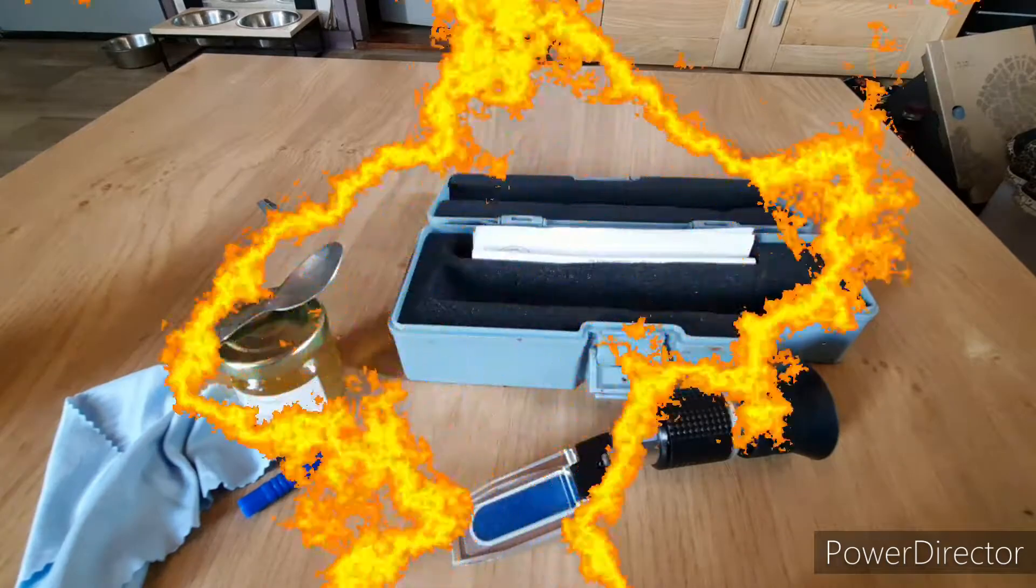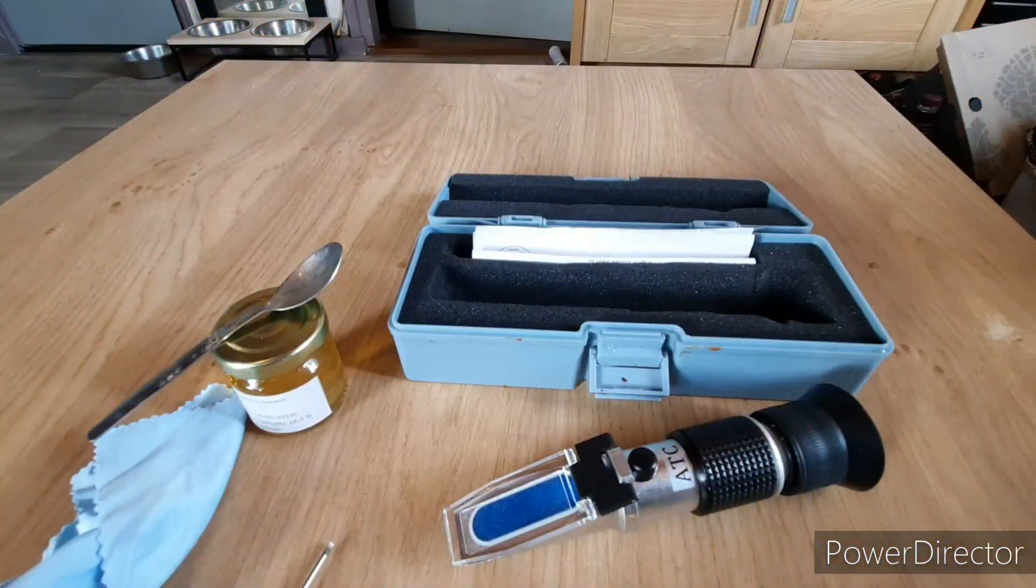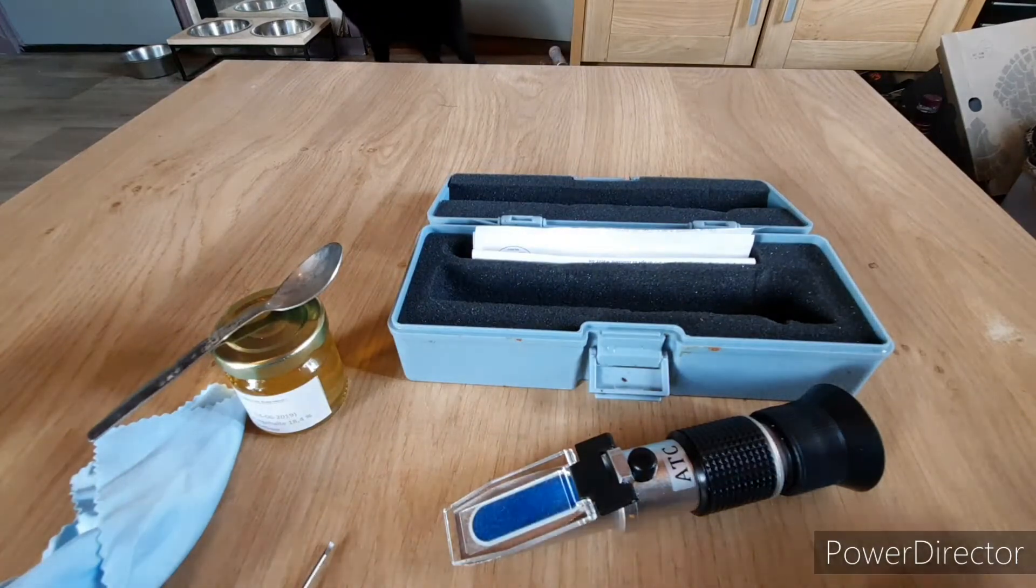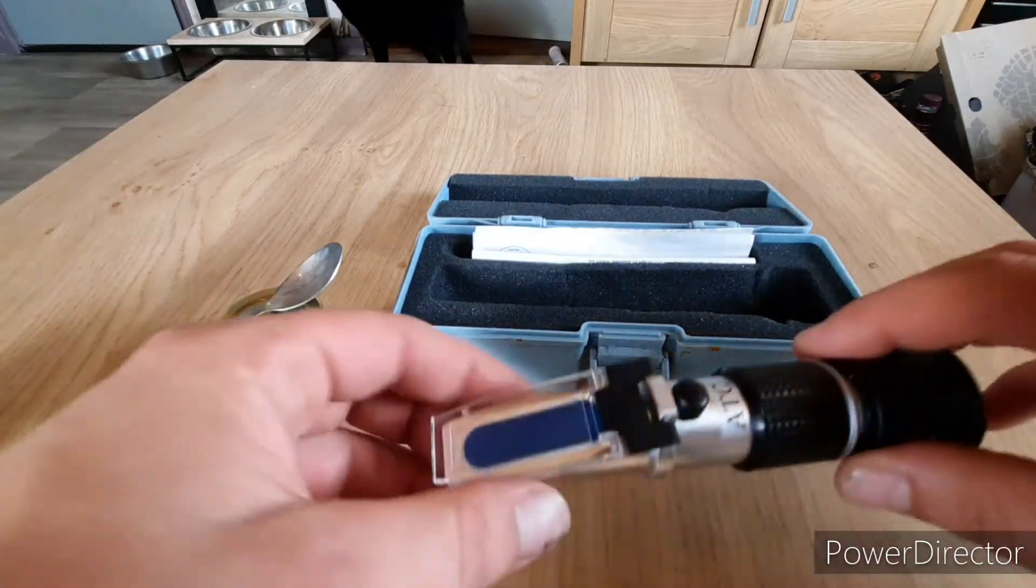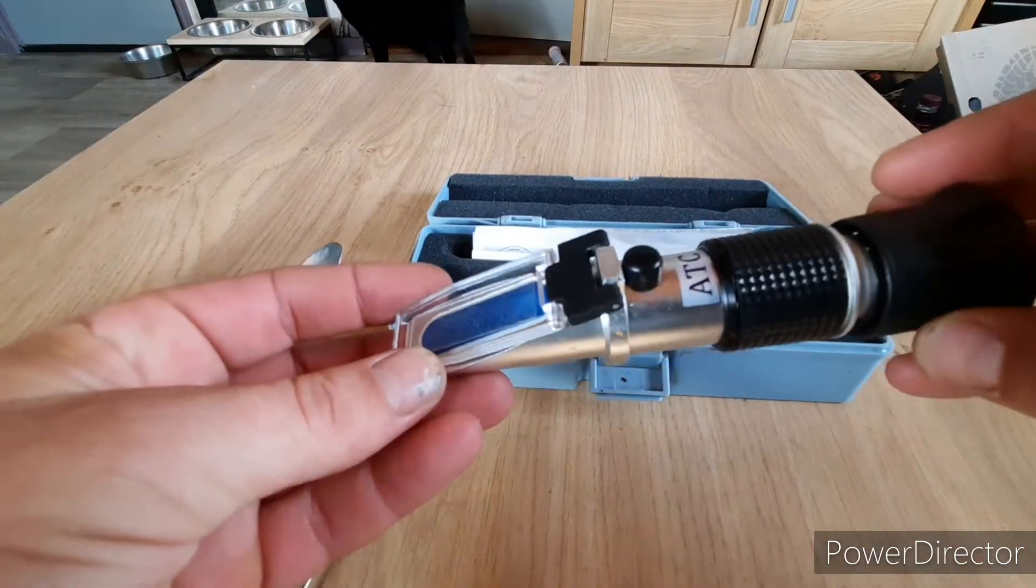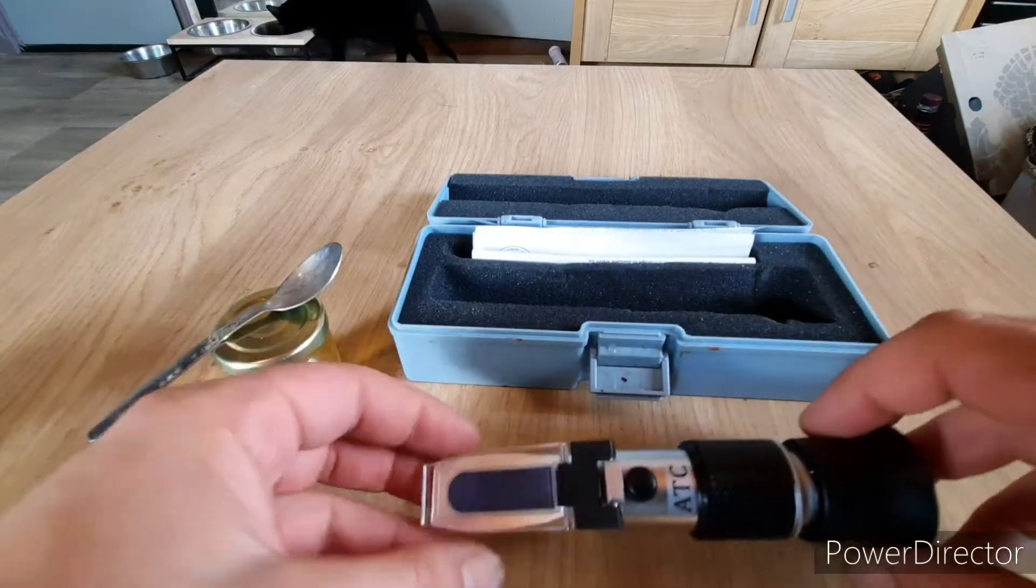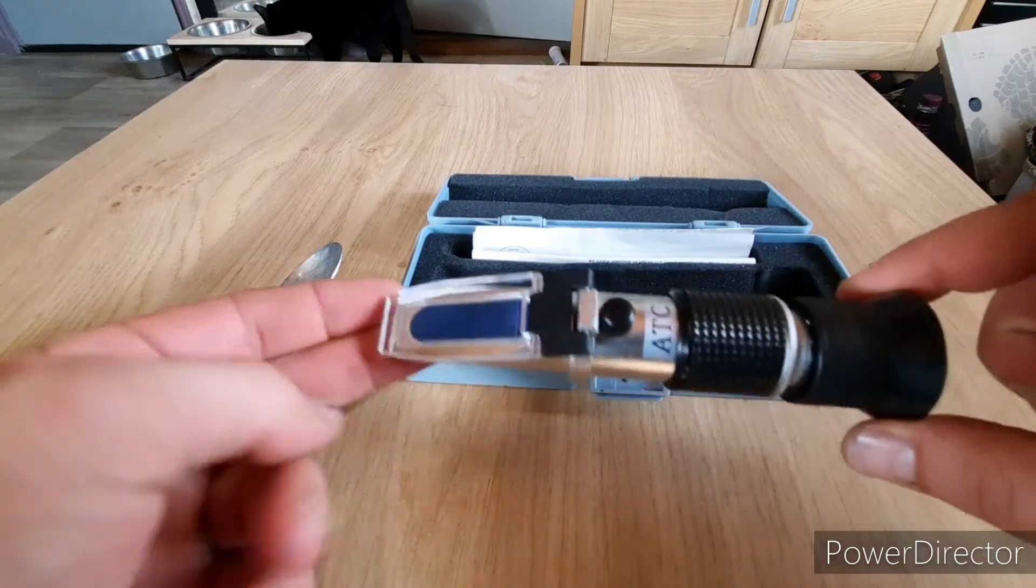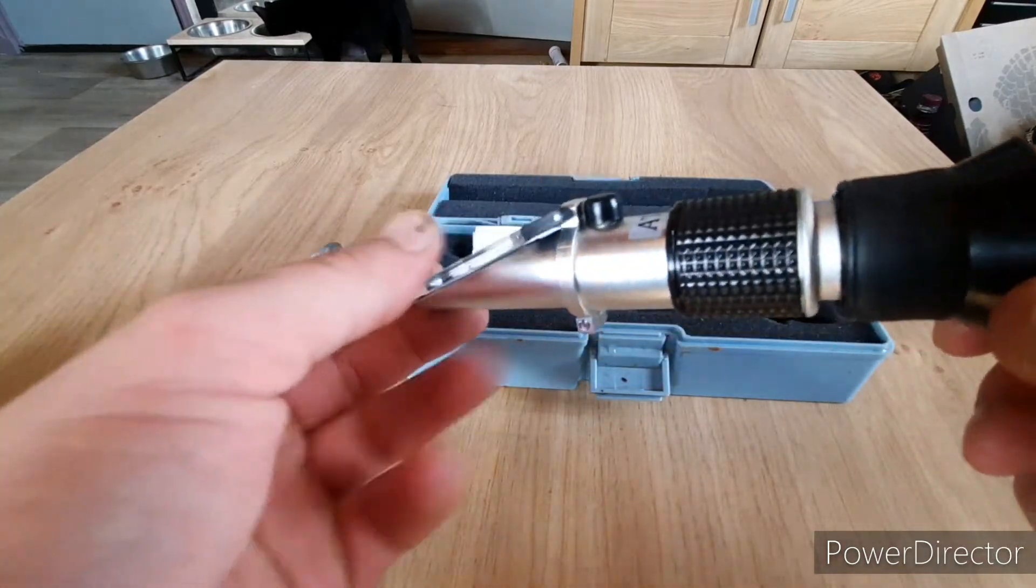Today I'm going to show how to use a refractometer to check the sugar level in honey. What is a refractometer? The refractometer is a little device that measures the index at which the light breaks through the fluid.